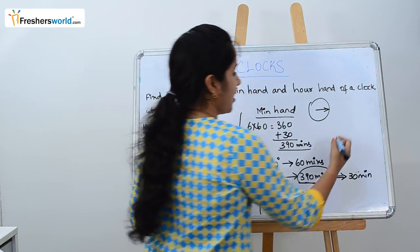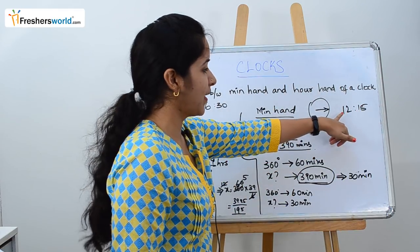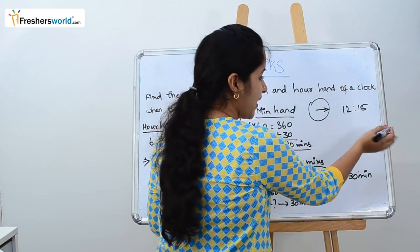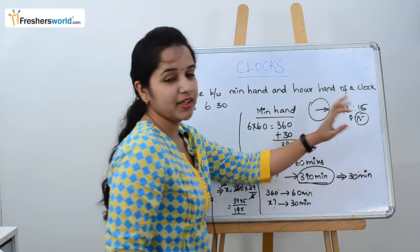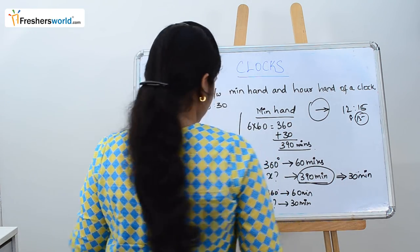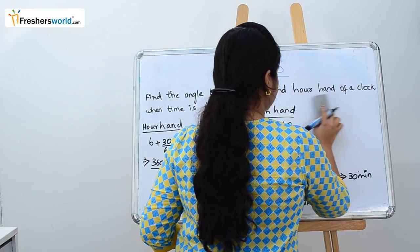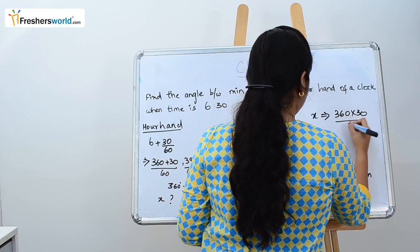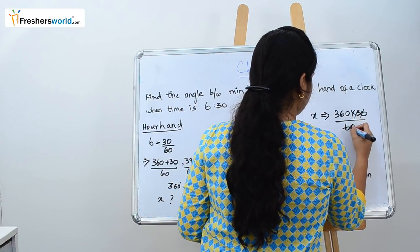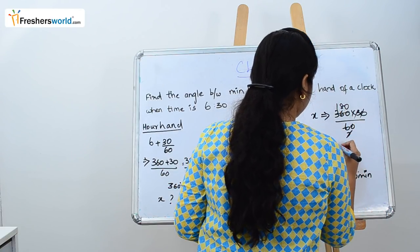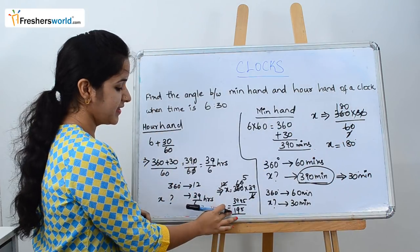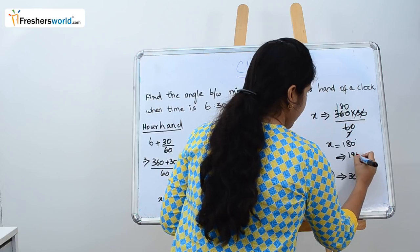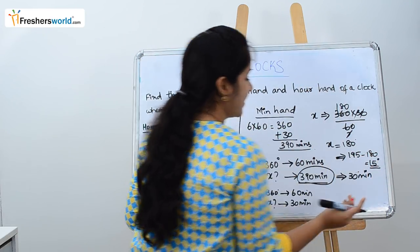This is the same for any other problem — for example if they ask 12:15, we don't need to find the angle for all 12 hours, only for the 15 minutes. Whatever minutes we get, finding the angle for just those minutes is enough. So x equals 360 into 30 divided by 60, which gives 180 degrees. The hour hand is at 195, the minute hand is at 180. The angle difference is 195 minus 180, which equals 15 degrees. The answer is 15 degrees.